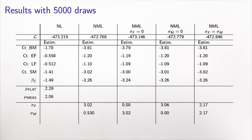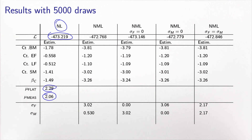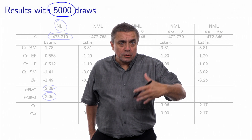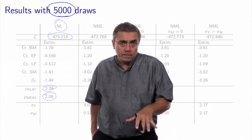I first estimated a nested logit model with that specification, obtaining a certain log likelihood. The mu parameters associated with the nests are larger than one as expected. Then I estimated a mixture logit model — a normal mixture of logit — approximating the integral with 5,000 draws. As mentioned, not all sigmas are identified, so I did four estimations. In the first, I tried to estimate both sigmas, but because the model is not identified, convergence of the optimization algorithm was very slow.